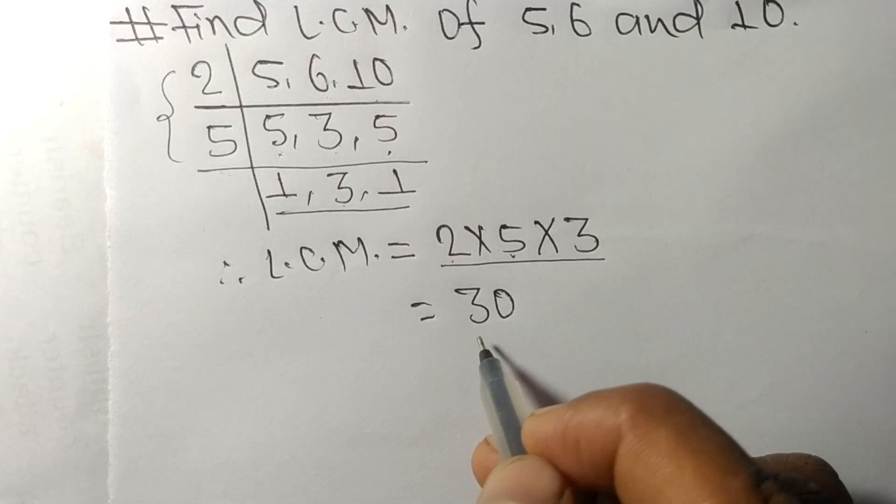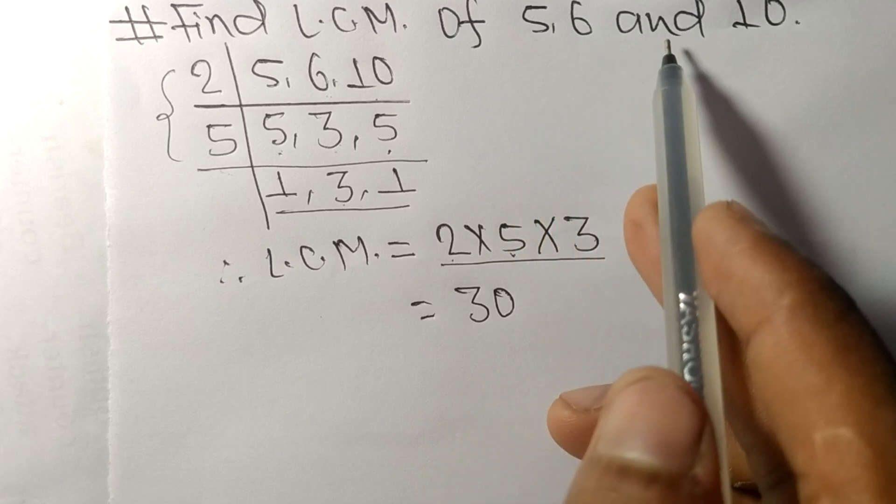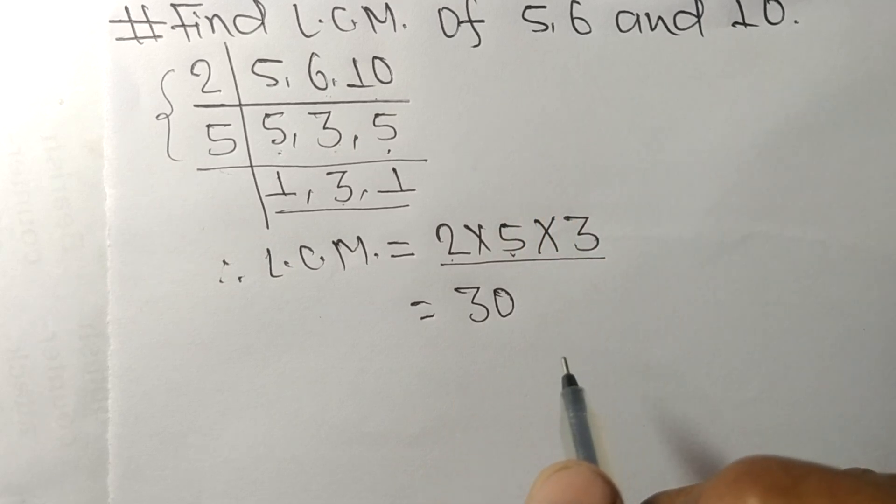we got 30. So 30 is the LCM of 5, 6 and 10. So this much for today and thanks for watching.